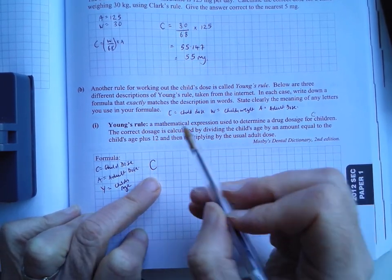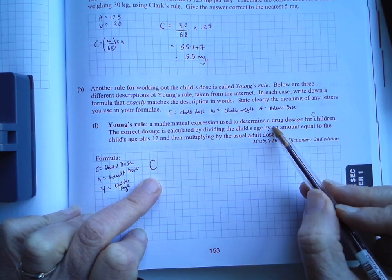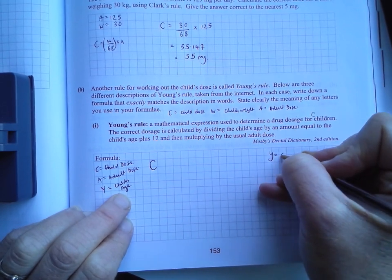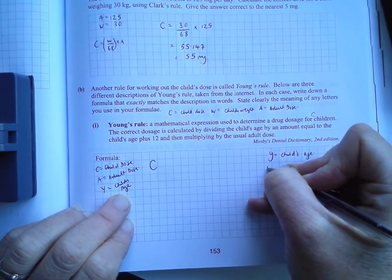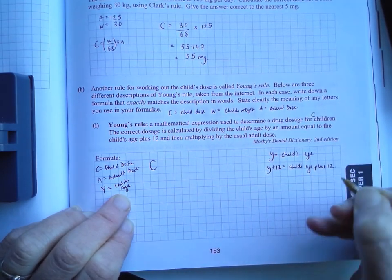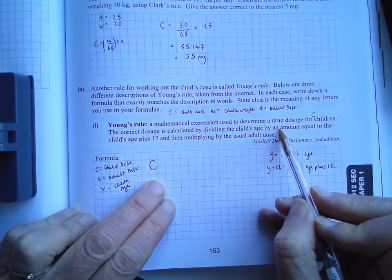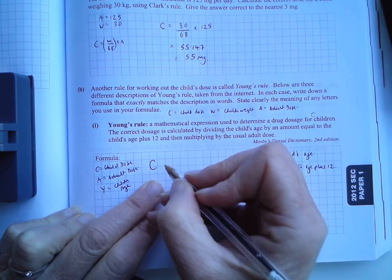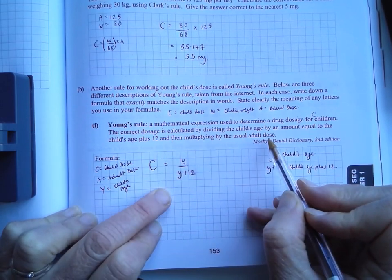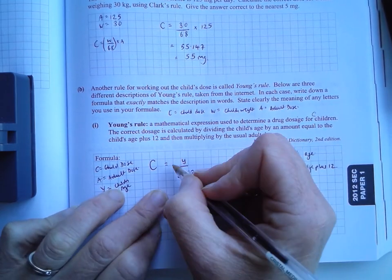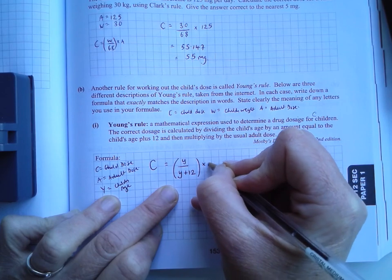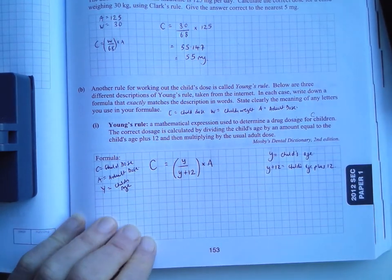So C is equal to—the correct dosage is calculated by dividing the child's age by an amount equal to the child's age plus 12. So the child's age would be, so Y is equal to the child's age. So Y plus 12 is equal to the child's age plus 12. So we have to divide the child's age by the child's age plus 12. So C is equal to Y divided by Y plus 12. And then multiplying by the usual adult dose. So the usual adult dose is A.